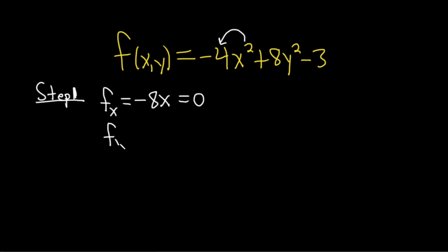Second step is to do the same thing with fy. In this case anything that has an x the derivative is going to be 0. It's going to be 0 here and this is going to be 0 here. So we simply get 2 times 8 so 16y and we set that equal to 0.